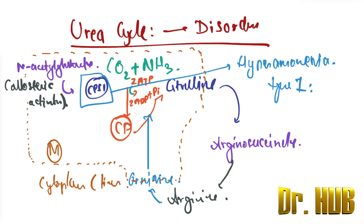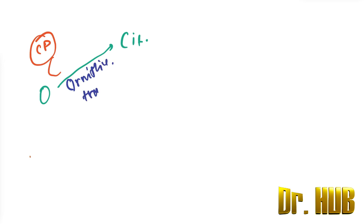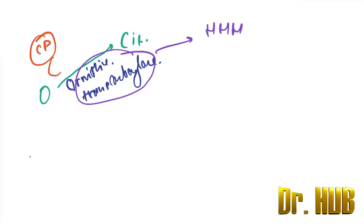Next is the conversion of ornithine to citrulline. This takes place in the mitochondria, with the addition of carbamyl phosphate. The enzyme here is ornithine transcarbamylase (OTC). A correction: the defect in ornithine transcarbamylase is not HHH syndrome — it is hyperammonemia type 2.